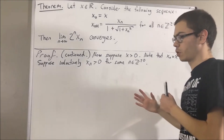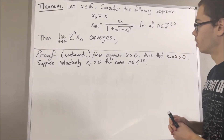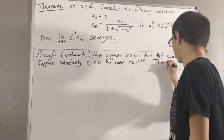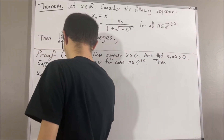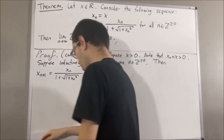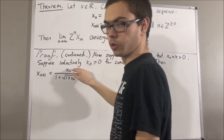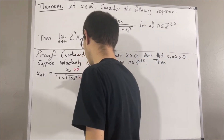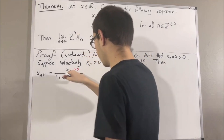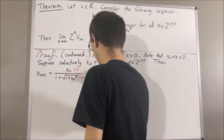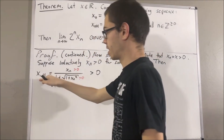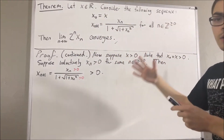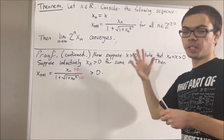We want to show xn+1 is greater than 0. By definition, xn+1 is this expression. We know that the numerator is greater than 0, because that's what we are assuming, and the denominator is also greater than 0. Therefore, the entire expression must be greater than 0, and that tells us xn+1 is greater than 0. By induction, we have that xn is greater than 0 for all n.